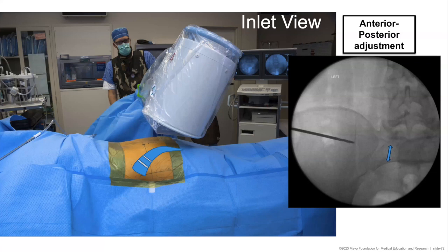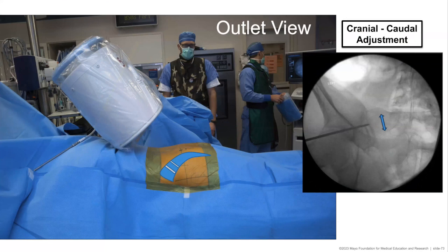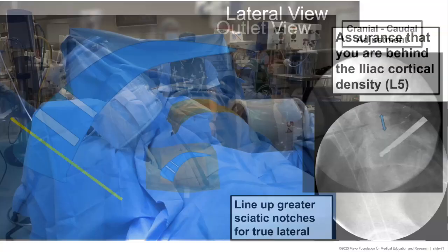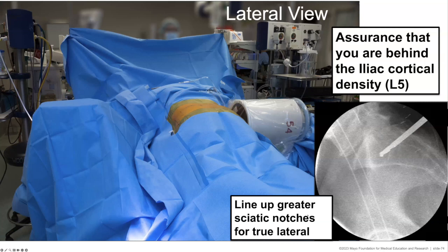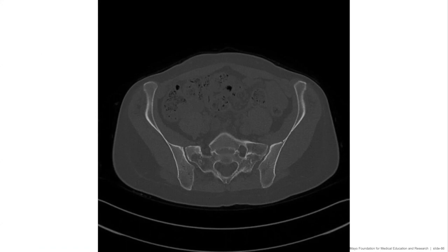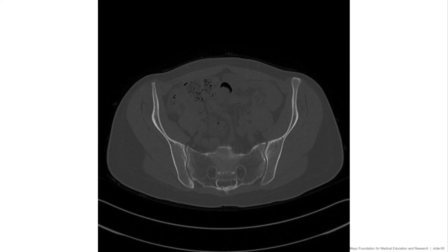If you want to double-check where you are, I always recommend getting the lateral view. You have a good lateral when the greater sciatic notches are superimposed over each other, and you want to be posterior to the iliac cortical density line and posterior to the anterior sacrum. Here is a dysmorphic example — as we go through this CT scan, you can see the tiny upper sacral segment pathways, and then wider open lower sacral segment. In this patient, we would have plenty of access to a transiliac transsacral screw or a fusion implant deep into the lower sacral segment.